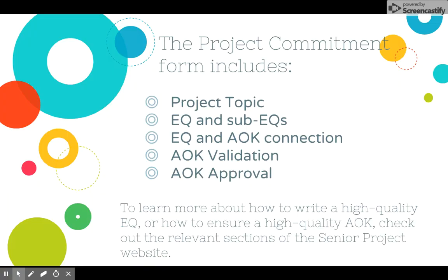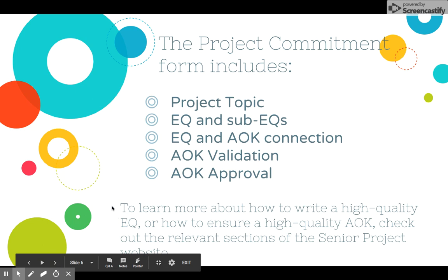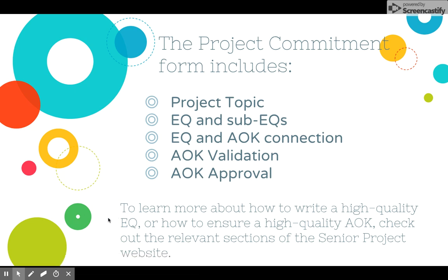Here is what the form includes. It is a series of questions and answers that you need to fill out, a bunch of circling, some tables. Basically, it includes these things: you have to list what your topic is, tell us what your essential question and sub-EQs are — there's a screencast for that. You also have to talk about how your essential question connects to your AOK. There is also a portion where you validate that your AOK is a viable one, and in some cases your AOK may need administrative approval. If you want to learn more about how to write a high-quality essential question or ensure a high-quality AOK, there are relevant sections with screencasts on the Senior Project website.